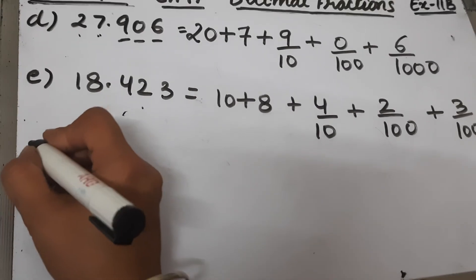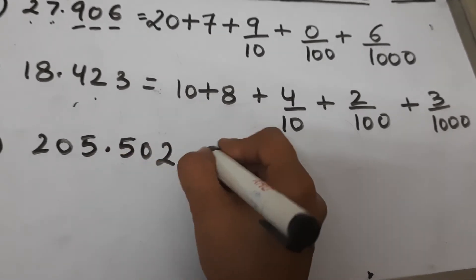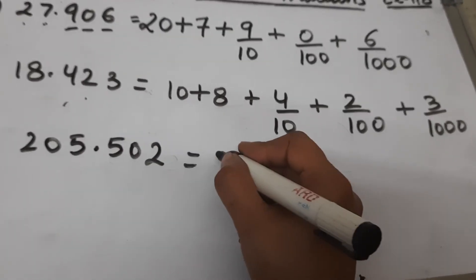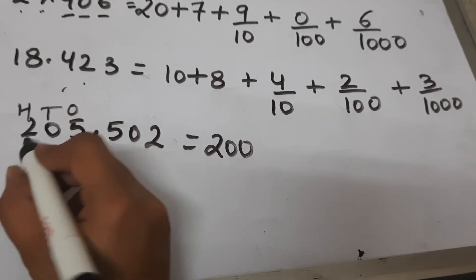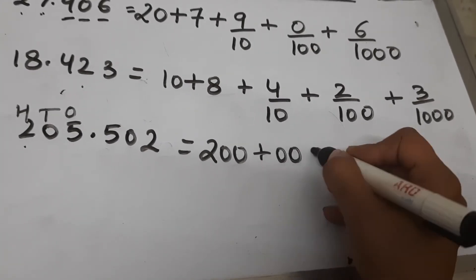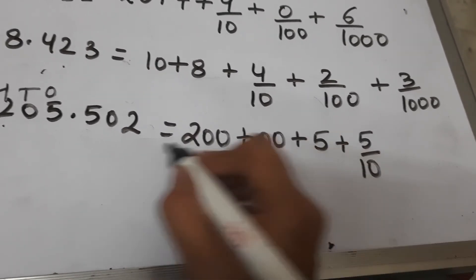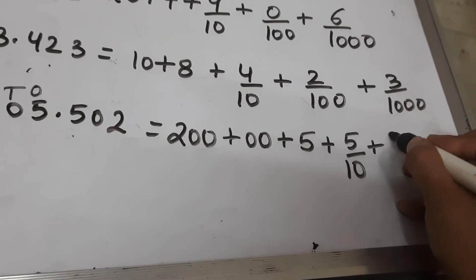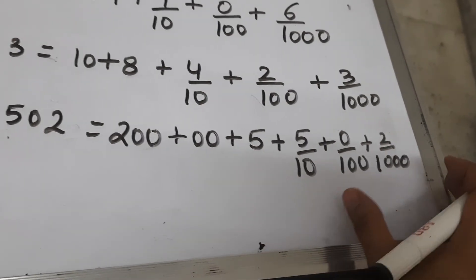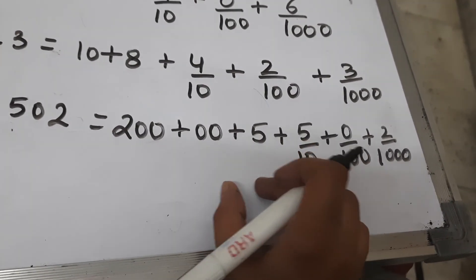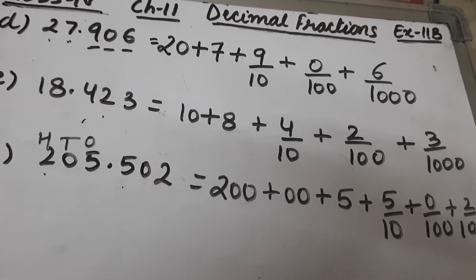Part f is 205.502. This has ones, tens, and hundreds places, so we get 200 plus 0 tens plus 5 ones, plus 5 upon 10 for the tenths position, 0 at the hundredths position, and 2 at the thousandths position. So the expanded form is: 200 plus 0 plus 5 plus 5 upon 10 plus 0 by 100 plus 2 by 1000.